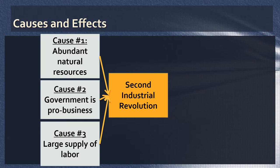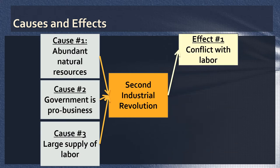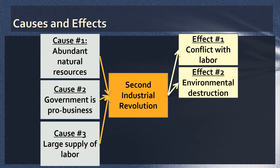Take those three things together and you've got the makings of an Industrial Revolution. Now let's look at some effects. One effect is labor conflict. There had been labor conflict before in the United States, but it will increase dramatically as working conditions get worse and worse — workers fight back. A second effect is environmental destruction. Americans think they will never run out of resources, so they mine the West extensively, chop down trees, and dig up all the coal — leaving a lot of destruction of the environment.